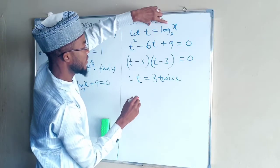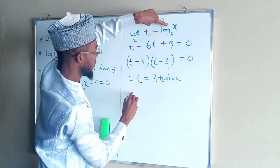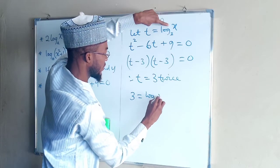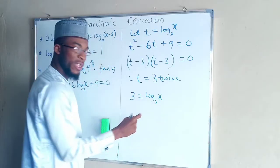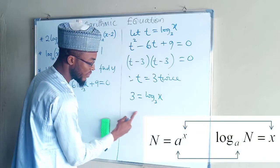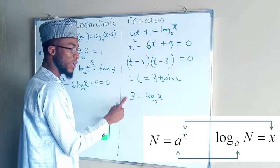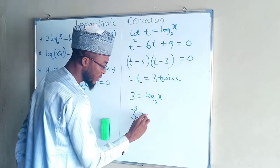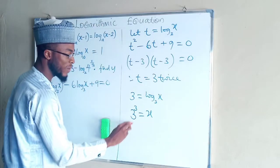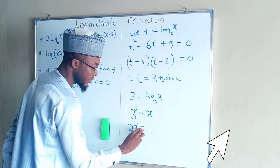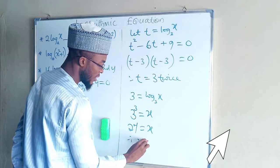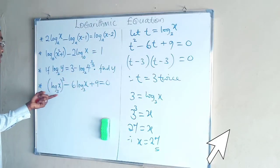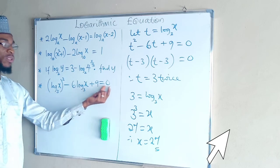Then we need to substitute here. If t equals this, therefore 3 now equals log x. From the definition of logarithm, if you take a base, raise it to the power of this number, it will give us x. So 3 power 3 is equal to x, and 3 power 3 is 27. It equals x. Therefore the value of x equals 27, and you can test it back with this main equation and you realize it will give you 0.